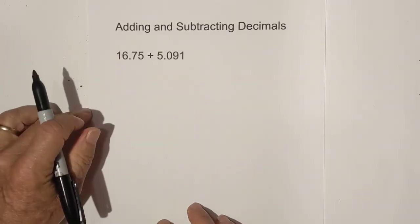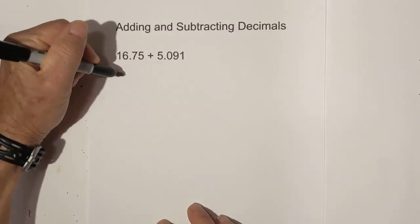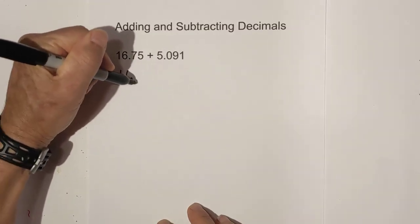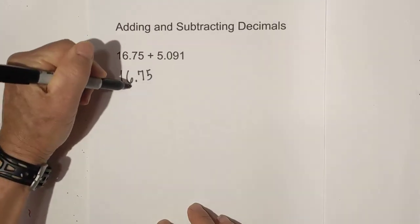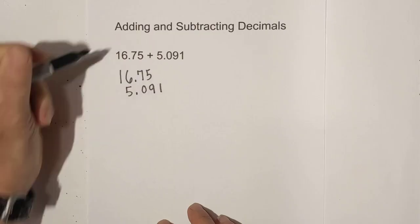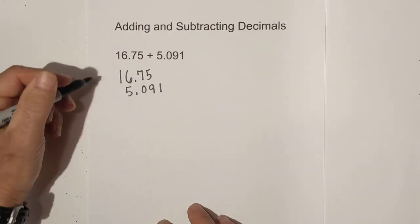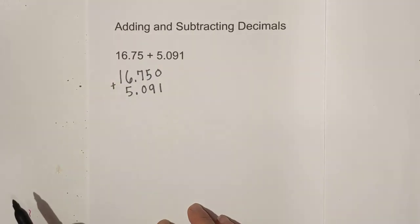We have 16.75 plus 5.091. I'm going to rewrite it and here's the decimal point. Notice how I line up the decimal point. Now this looks kind of strange, so we can add a placeholder zero as long as it's to the right of the decimal.